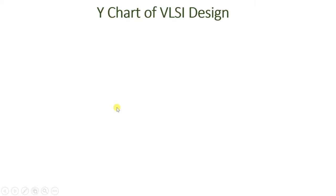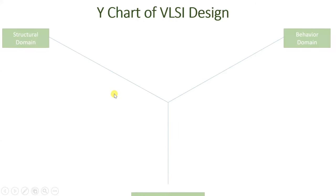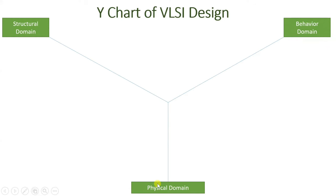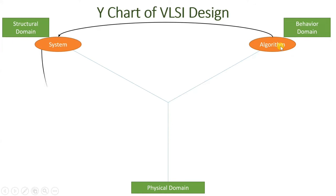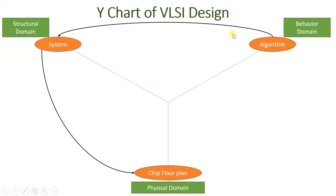In the Y-chart, we have three domains — structural domain, behavioral domain, and physical domain. When we start with VLSI design, we have specifications, and based on that we make an algorithm in the behavioral domain. Once we have the algorithm in the behavioral domain, it is given to the structural domain where there will be system assignment. With respect to the assigned system, in the physical domain there will be a chip floor plan, and in that chip floor plan there will be placement of blocks.